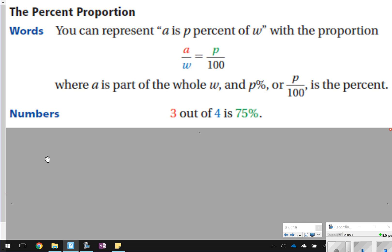A is always going to be considered the part, W will be considered the whole, P will be considered the percent because percents are always out of 100.